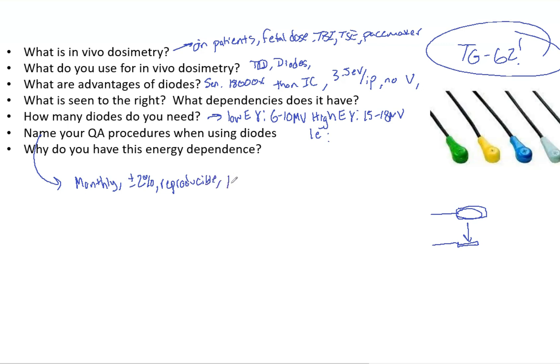You want that to be plus or minus 2% for your QA. You want your results to be reproducible. You want the leakage, because that's important. You don't want leakage on your diodes. You want that to be less than 0.5%. You want the dose rate dependence less than 2%. And you also want them to be linear. So if you increase MUs as you irradiate the same diode, you see that there is a linear pattern. So essentially, your reading at 100 MUs should be half that of 200 MUs.